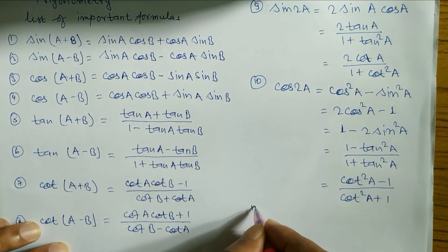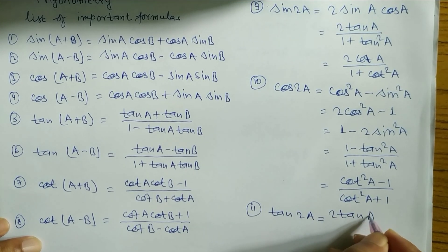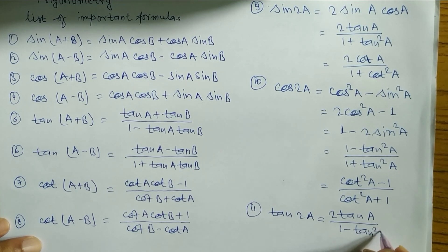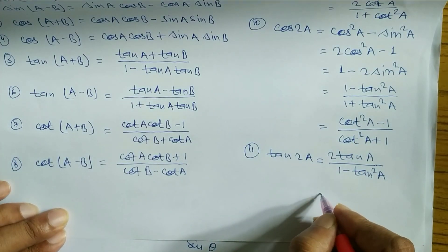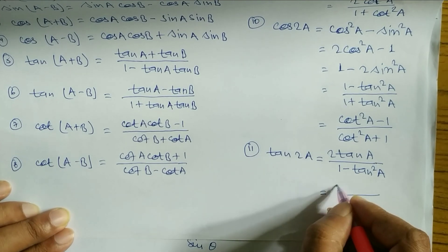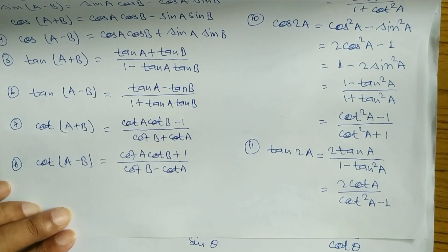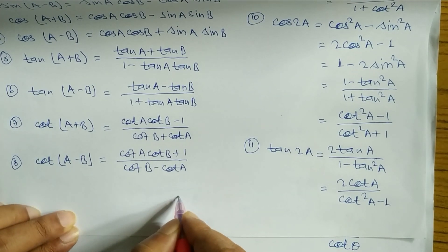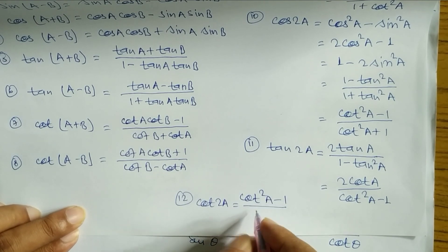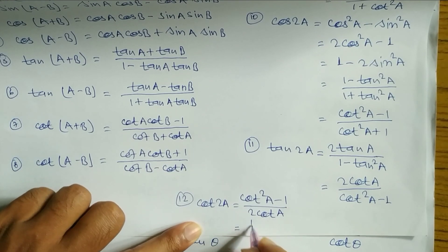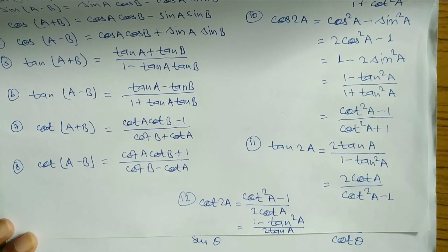Formula number 11: tan 2A is equal to 2 tan A / (1 − tan² A). Another formula in the form of cot: 2 cot A / (cot² A − 1). Formula number 12: cot 2A is equal to (cot² A − 1) / (2 cot A). Another formula in the form of tan: (1 − tan² A) / (2 tan A).